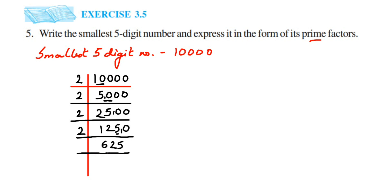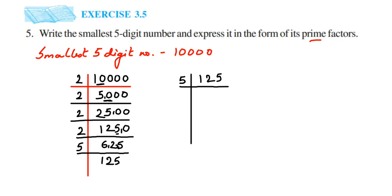Dividing 1,250 by 2 gives 625. Now 625 — we check the next prime number: it doesn't go into 3, so we take the next prime number, which is 5. Dividing 625 by 5: 5 ones are 5, remainder 1 combined with 2 gives 12; 5 twos are 10, remainder 2 combined with 5 gives 25; 5 fives are 25. So 625 ÷ 5 = 125.